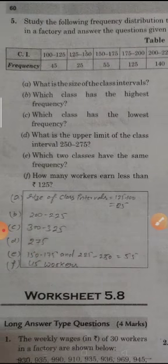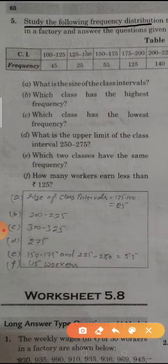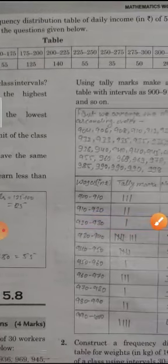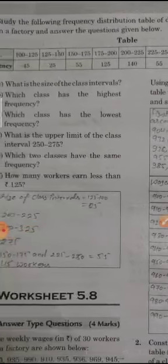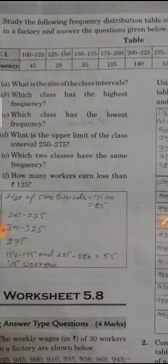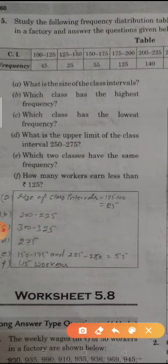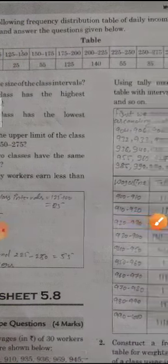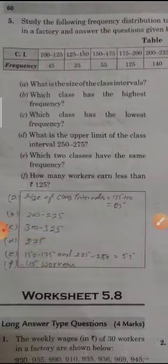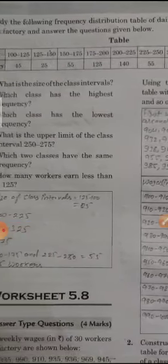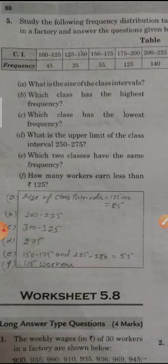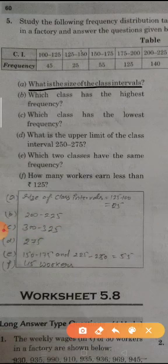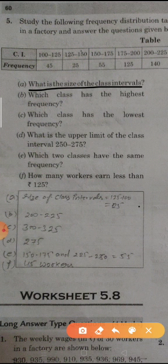Q5: study the following frequency distribution table of daily income of 550 workers in a factory and answer the questions given below. They give the data: the money and their workers. First is, what is the size of the class interval? Size of class interval is 125 minus 100 is 25. So all class size interval is 25.